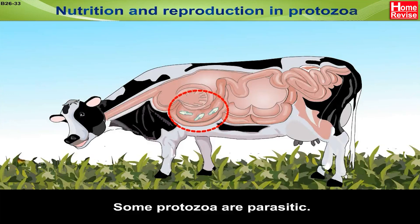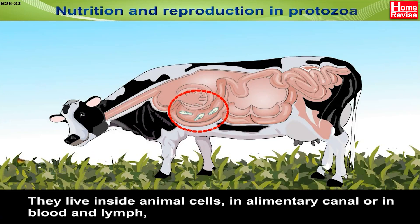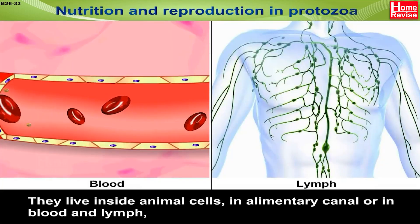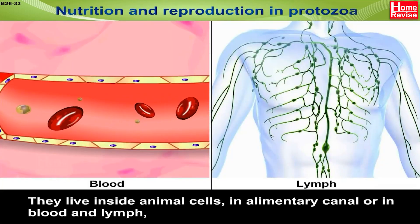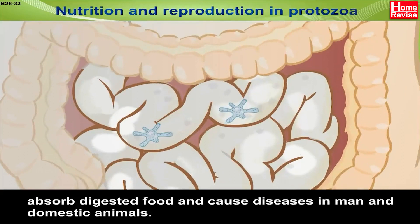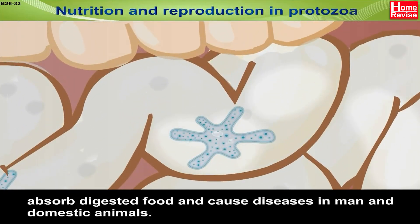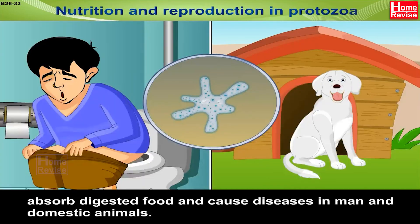Some protozoa are parasitic. They live inside animal cells, in the alimentary canal, or in blood and lymph. They absorb digested food and cause diseases in humans and domestic animals.